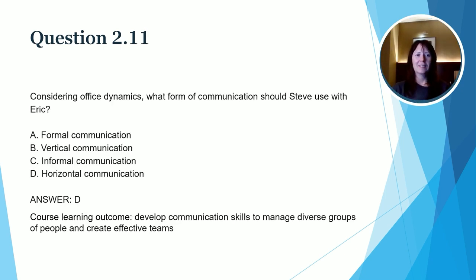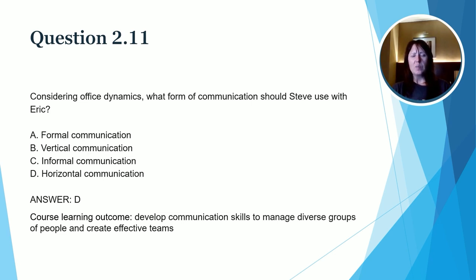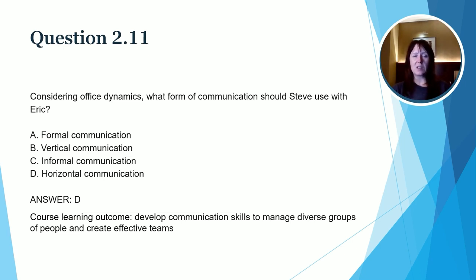This question focuses on office dynamics and asks what form of communication Steve should use with Eric. The options are formal, vertical, informal, and horizontal communication. The correct answer is D, horizontal communication. It's not formal communication, not vertical communication since it's not to a different department, and not really informal communication — most likely it's horizontal, as Steve is communicating with one of his colleagues. The course learning outcome is: develop communication skills to manage diverse groups of people and create effective teams.